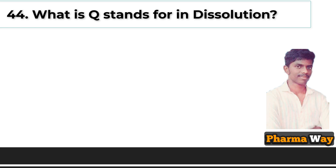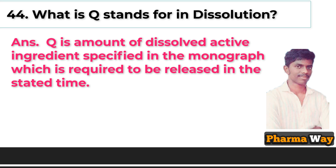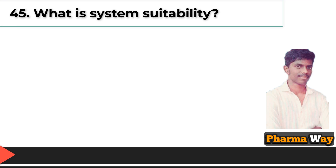What is Q value in dissolution? Answer: Q is the amount of dissolved active ingredient specified in the monograph that is required to be released at a stated time.